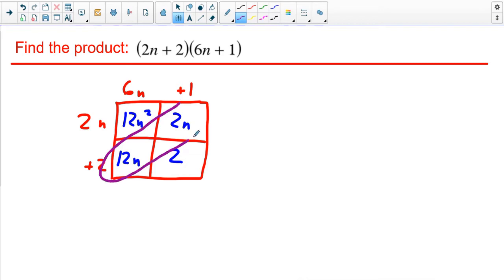This is a 12N, and this is a 2N. So kind of along the diagonal here are some like terms. We can combine these. So this is just going to give me 12N squared. 12N and 2N, that's going to give me 14N. And then the 2 is just a 2.